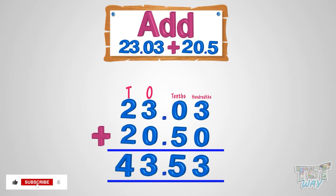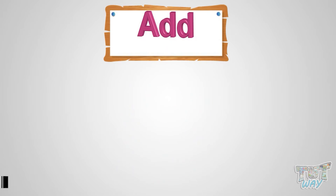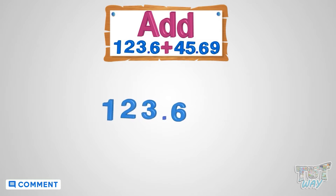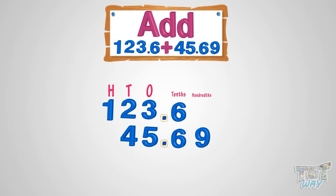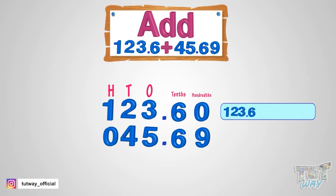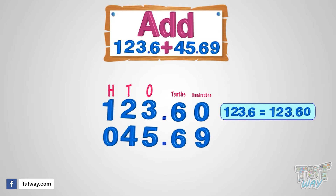Now let's take another example. Here we have two decimal numbers — now let's add them. First of all, write the numbers in such a way that the decimal points are aligned, and you can add zeros too. You can write 123.6 as 123.60.